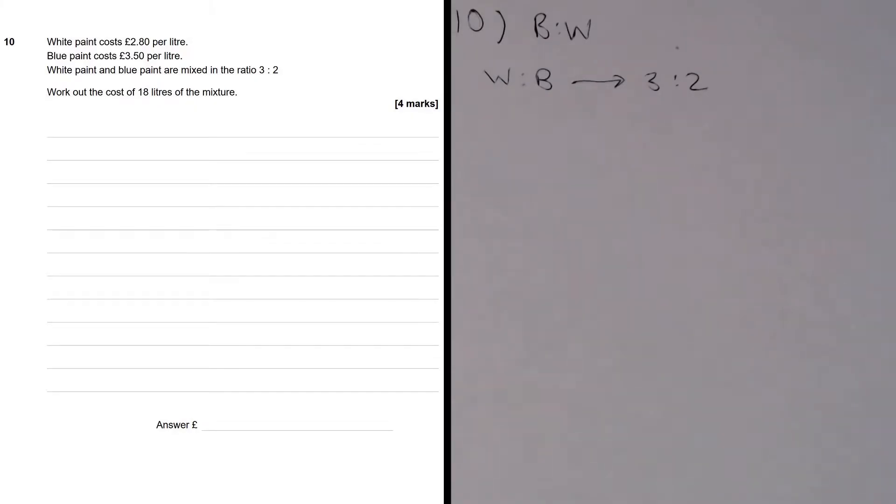Question 10 tells us that white paint costs £2.80 per litre and blue paint costs £3.50 per litre. We are given that white paint and blue paint are mixed in the ratio 3 to 2. And we are asked to work out the cost of 18 litres of the mixture. Now this is quite a tricky question.